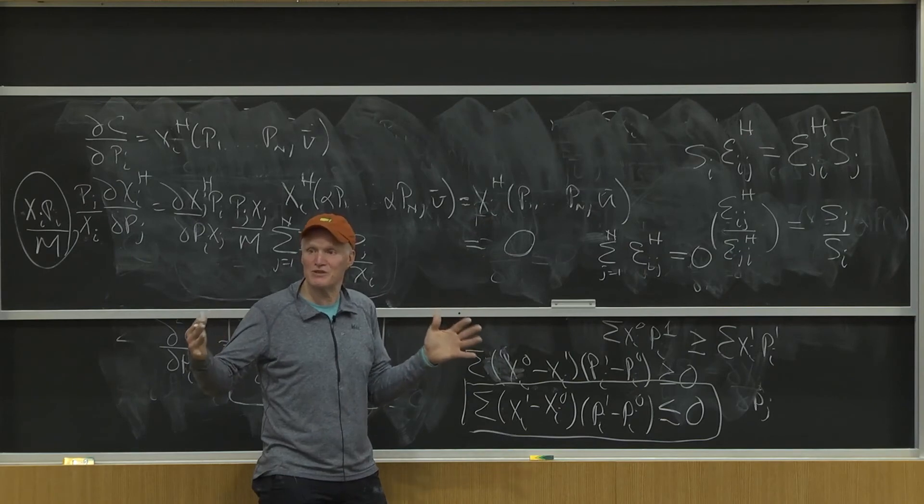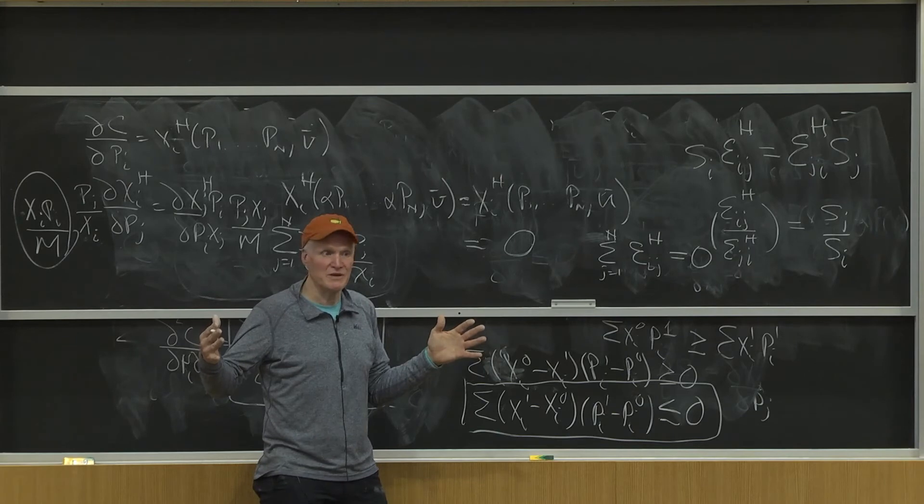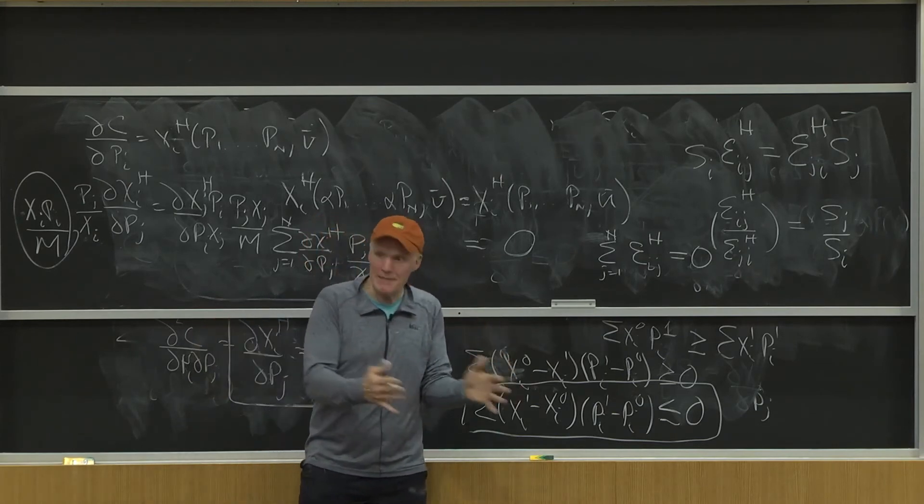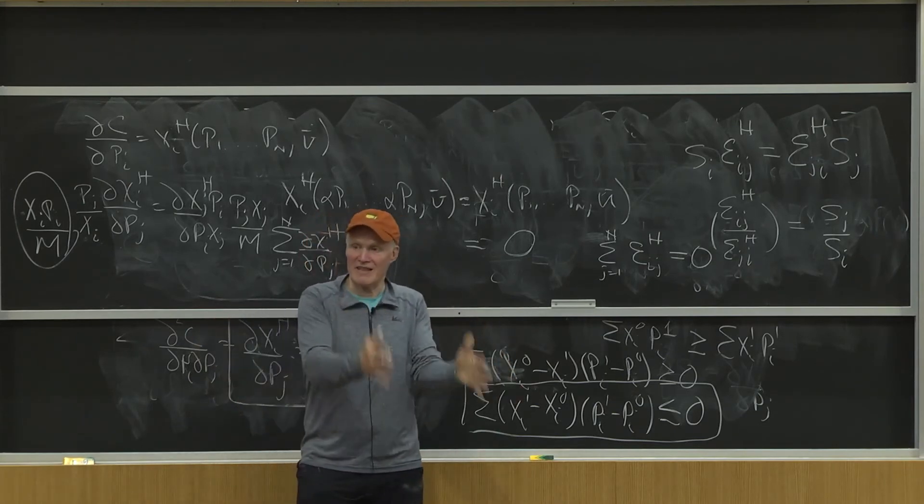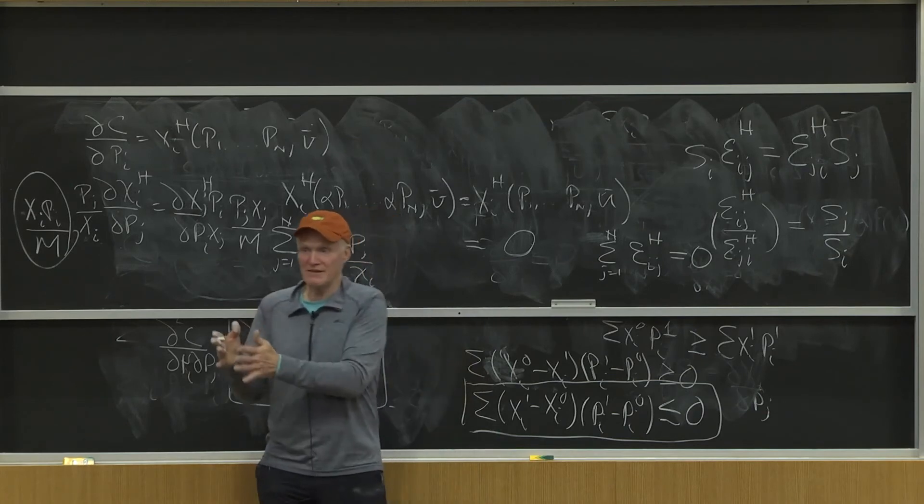Think about the fixed proportion case, kind of makes it easy to see. It's two goods in fixed proportions. I've got to buy A and B. A costs $1,000. B costs $1.